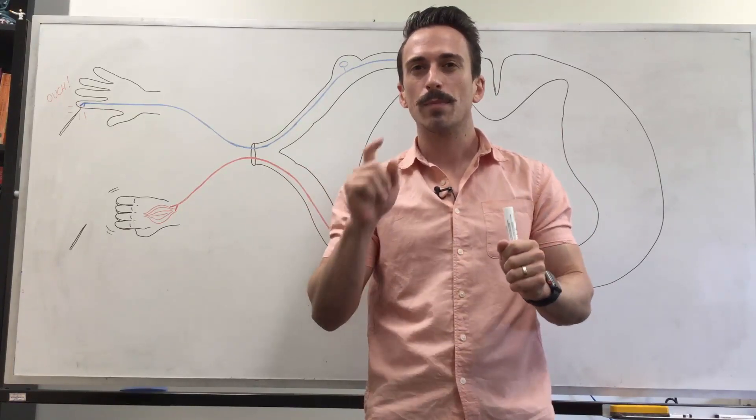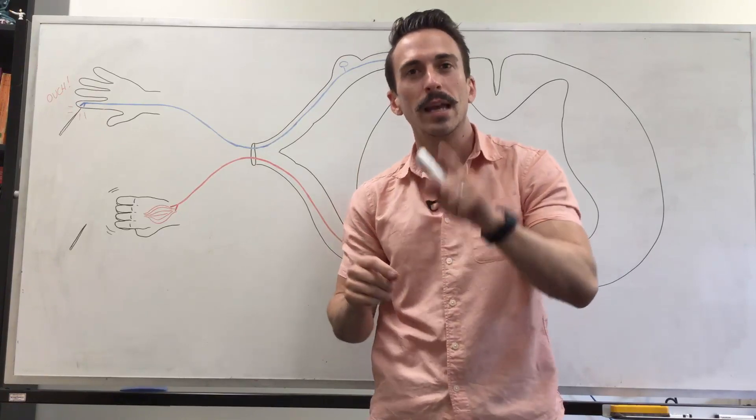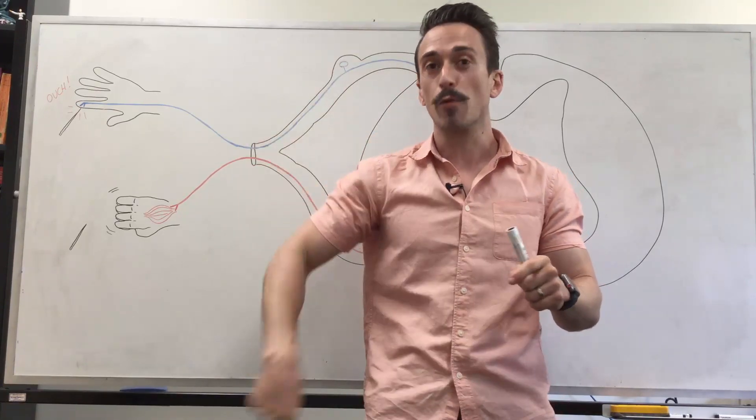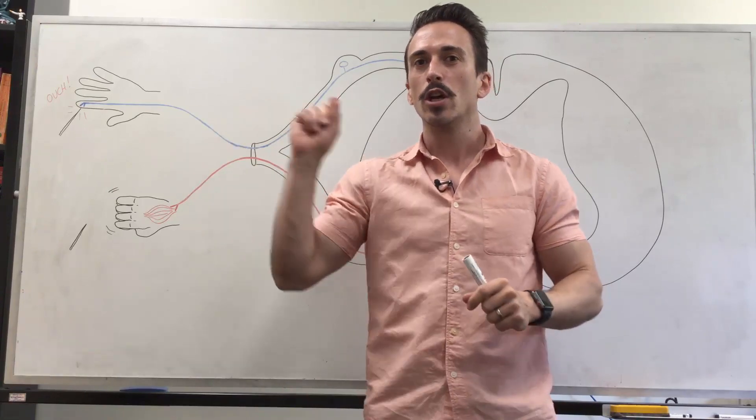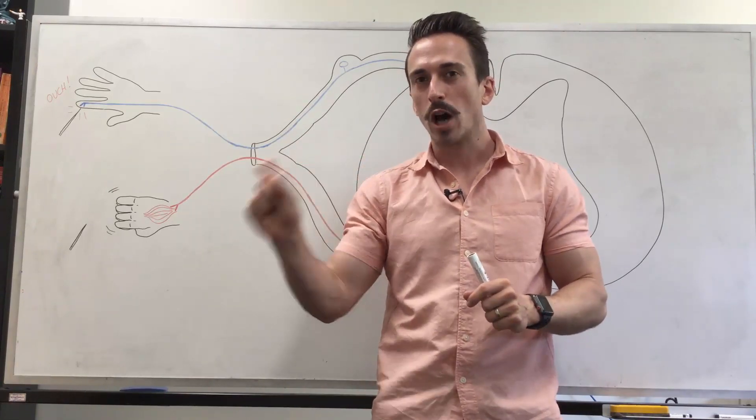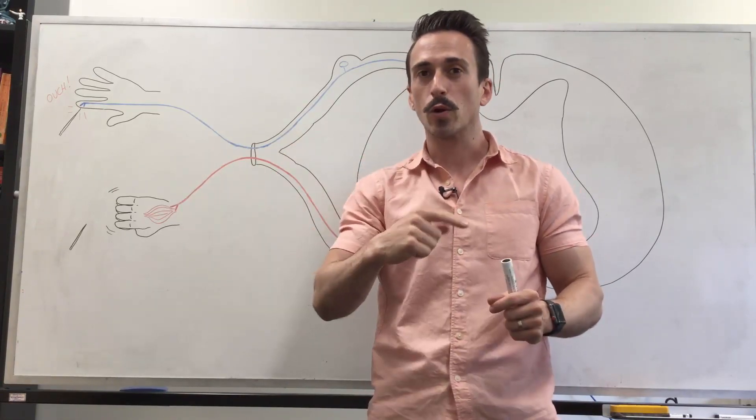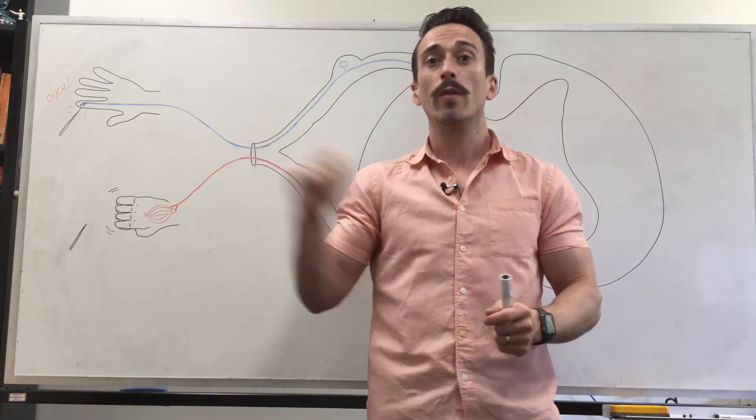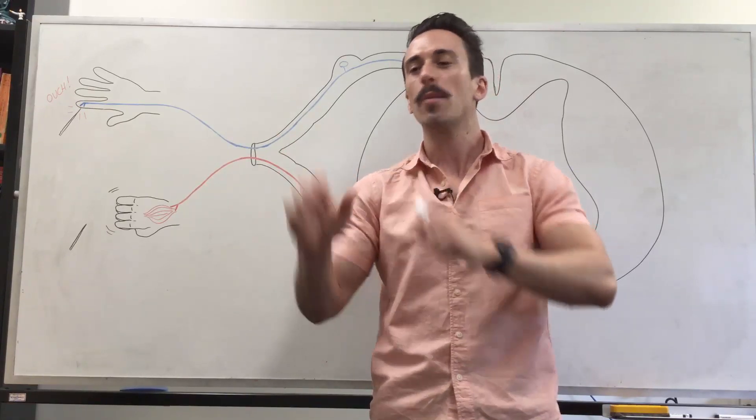This means it needs to be fast, and in order for it to be fast it must bypass the brain. So all the reflex arc does is go straight from the site of the stimulus into the spinal cord and straight back out again to avoid that stimulus. It's made up of five components.